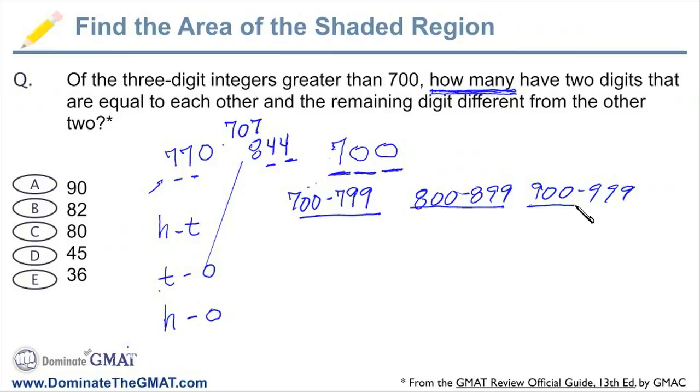Because it says how many are there going to be starting at 700, but we're looking at three digit integers. So once we get to 1,000, we no longer have three digit integers.